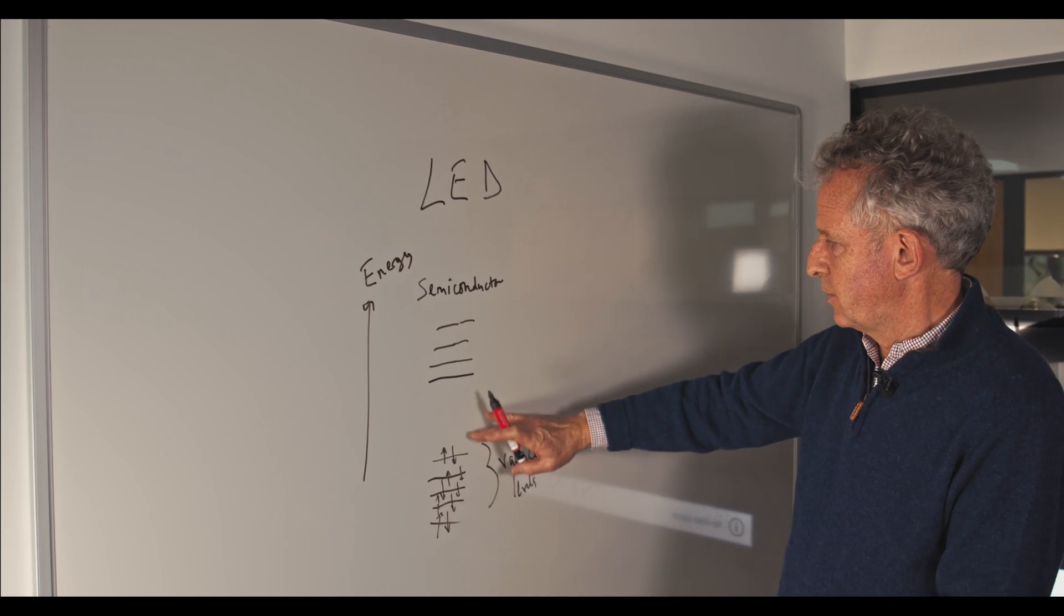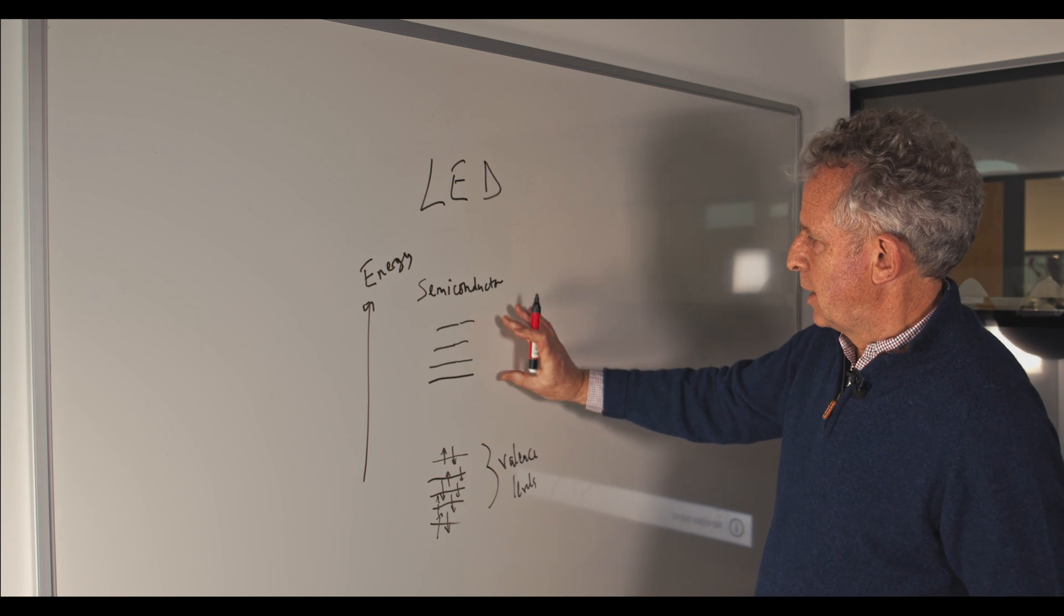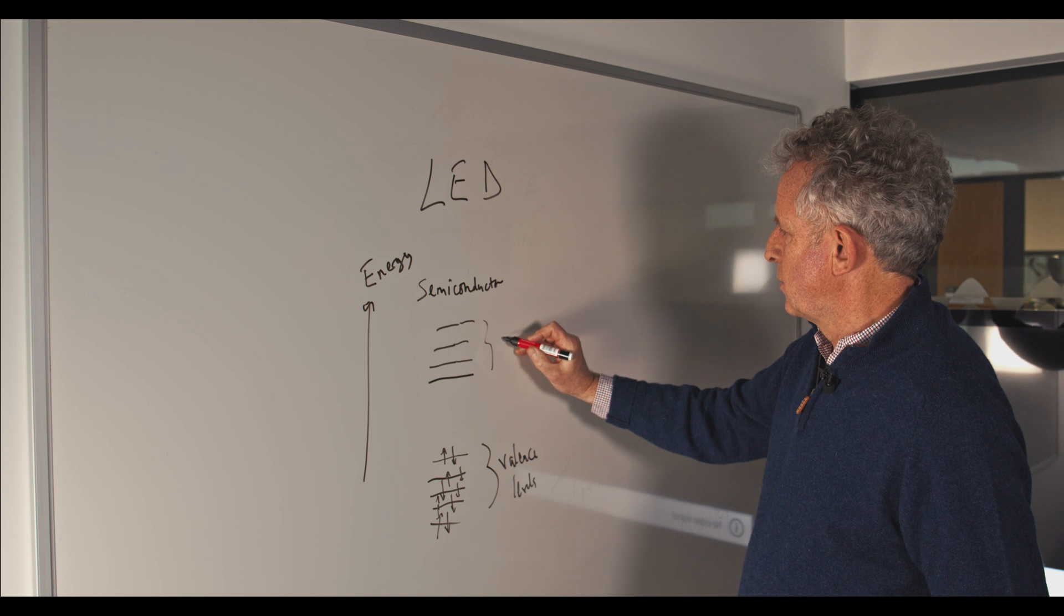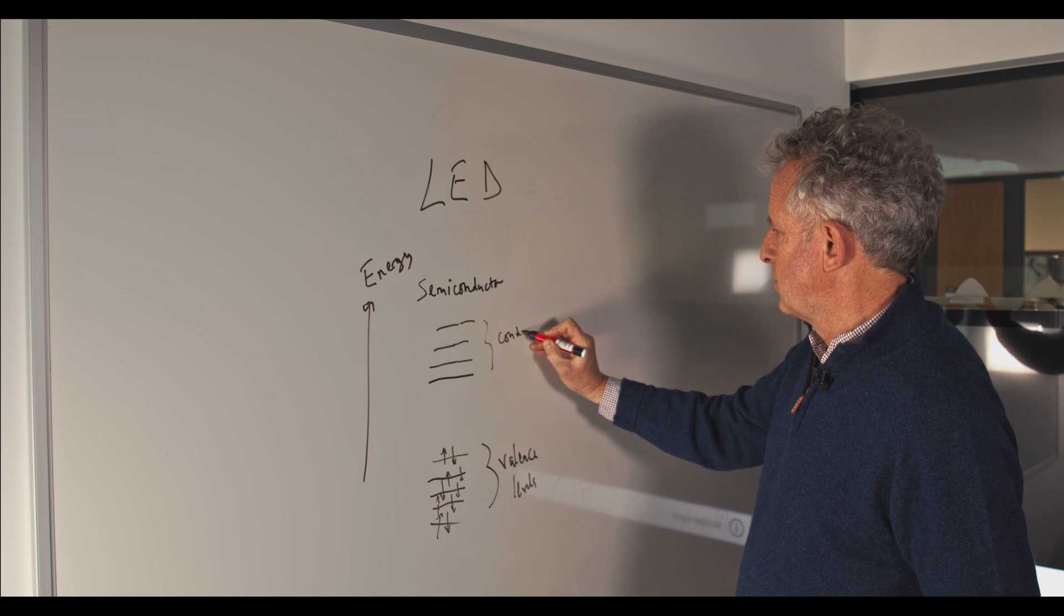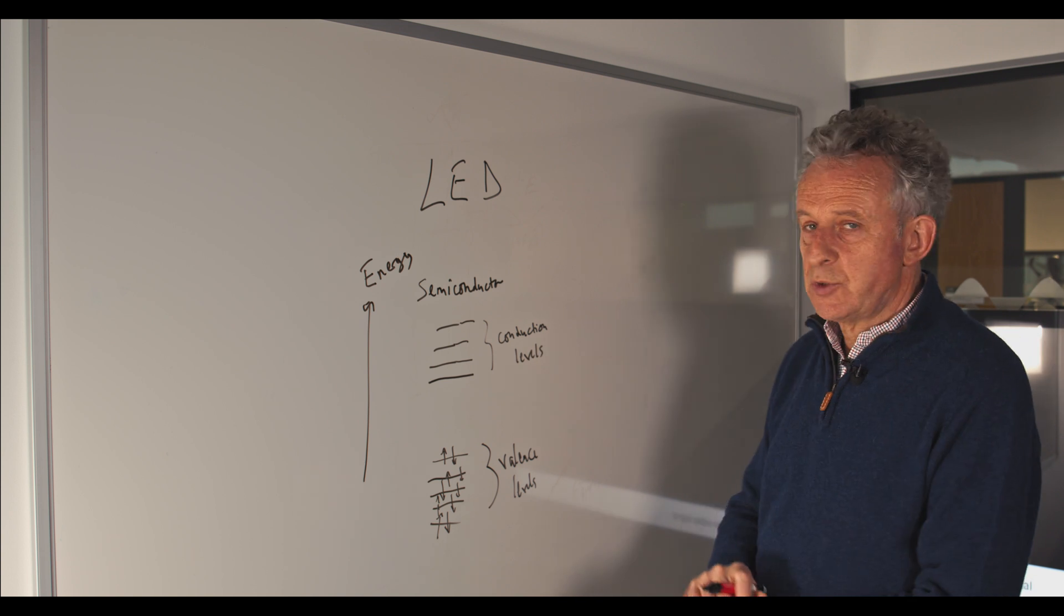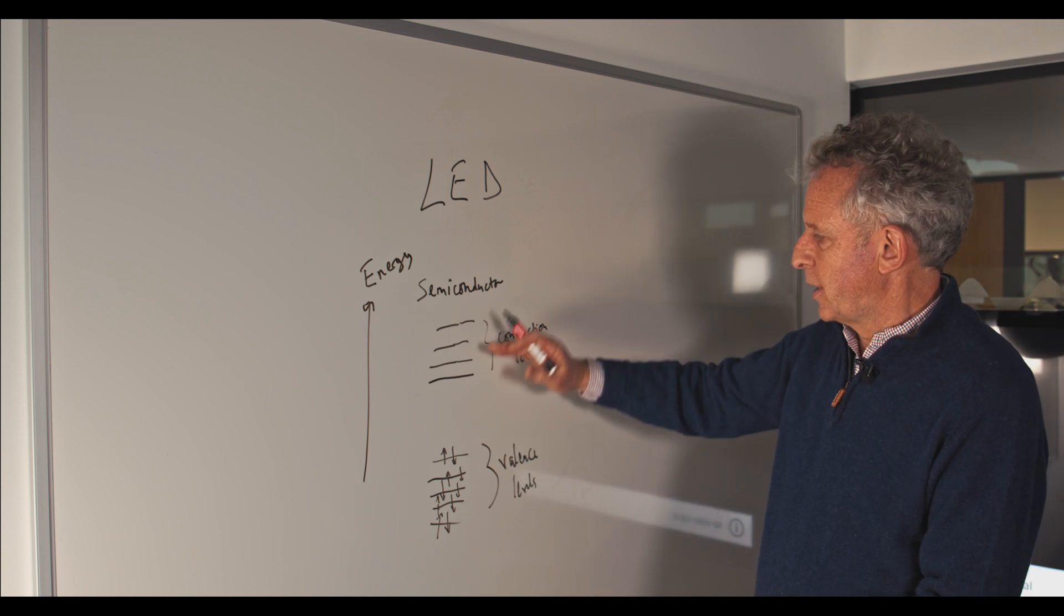Then there's an energy gap which we tune to be the right color to give the right color of emission, and then we have empty orbitals which are generally in semiconductor parlance called conduction levels. Chemists would tend to call them anti-bonding orbitals, they're high energy.